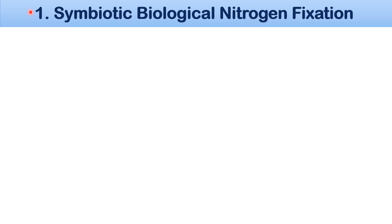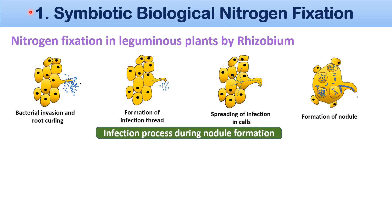The first one is symbiotic biological nitrogen fixation. In symbiotic biological nitrogen fixation, the association between plants and bacteria is ecological or mutual. Here, the plants provide food to bacteria, and in return bacteria fix the nitrogen in the soil. A bacterium called Rhizobium helps in nitrogen fixation in leguminous plants. They live in the roots of leguminous plants like peas and beans.